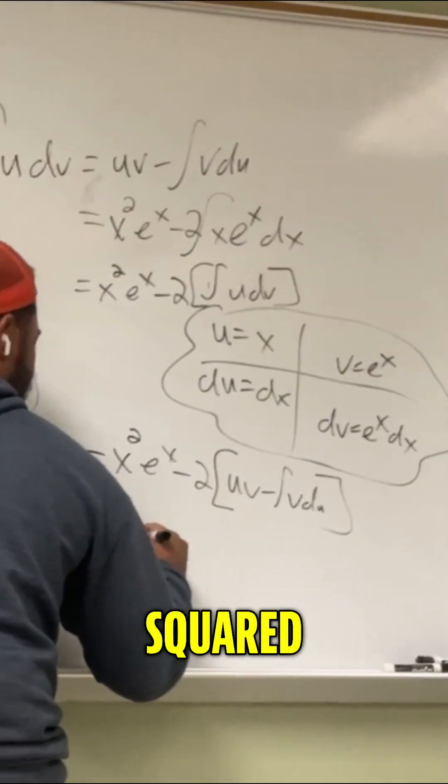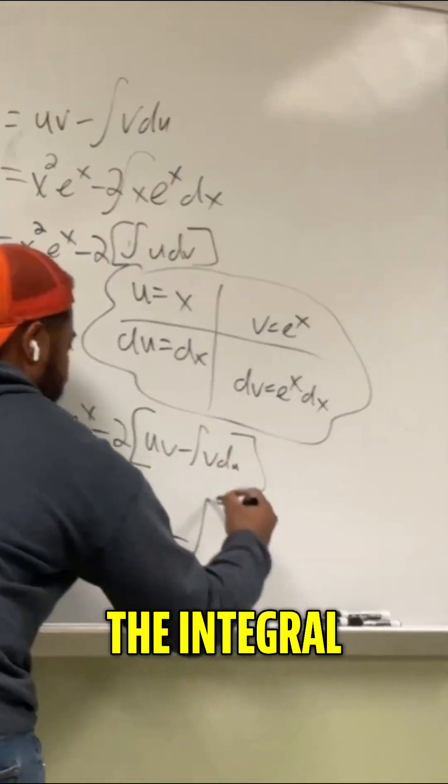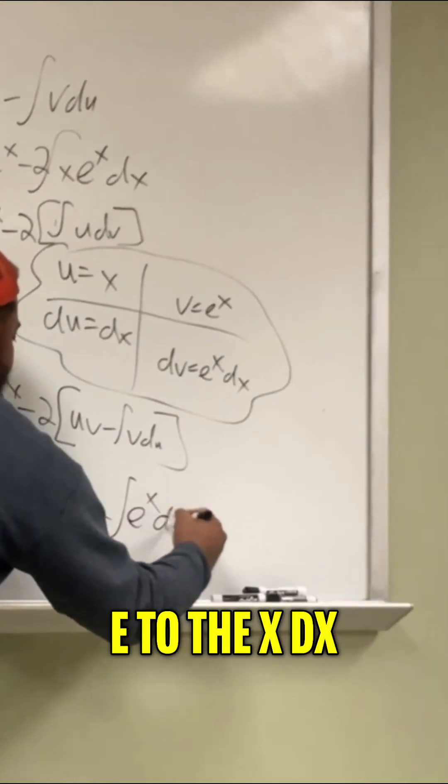uv minus the integral of v du, which is x squared e to the x minus 2 times x e to the x minus the integral of e to the x dx.